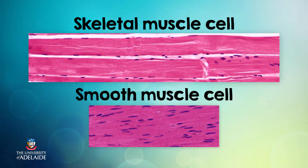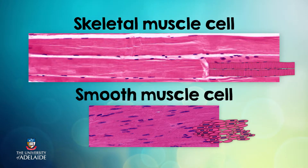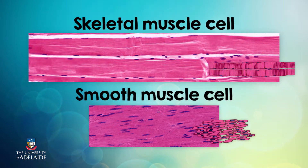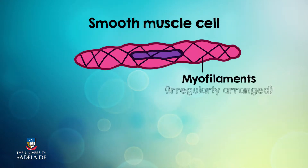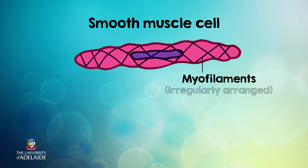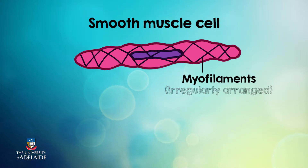Under a microscope, smooth muscle cells look quite different to skeletal muscle. They have just one nucleus and you don't see the distinctive stripes or striations found in skeletal muscle. This is because smooth muscle cells have a different microscopic structure — their myosin and actin myofilaments in the sarcoplasm are not as regularly arranged as they are in skeletal muscle. So smooth muscles are sometimes referred to as non-striated muscles.